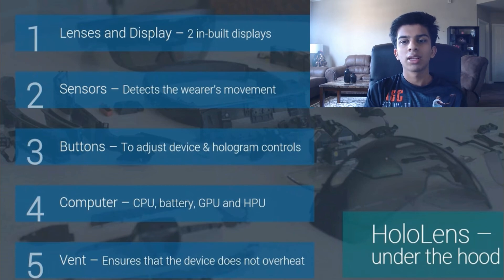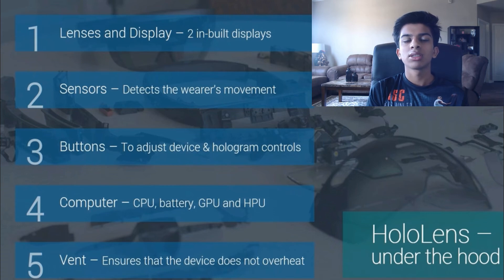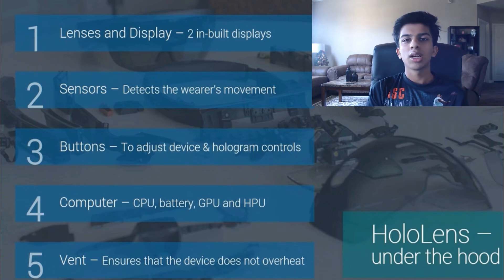HoloLens is a computer in itself — it has a CPU, GPU, and HPU. GPU is the graphics processing unit and HPU is the holographic processing unit. It runs on Windows 10 and has a vent which ensures the device doesn't overheat, because the holograms require power almost like a laptop and can overheat, so the vent keeps it cool.